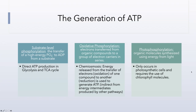We are on to part three of chapter six, looking at production of ATP. ATP is generated through three primary mechanisms. The first is substrate level phosphorylation, where a high-energy phosphate group is directly transferred to ADP to form ATP, and that transfer occurs from an actual substrate within a metabolic pathway itself.